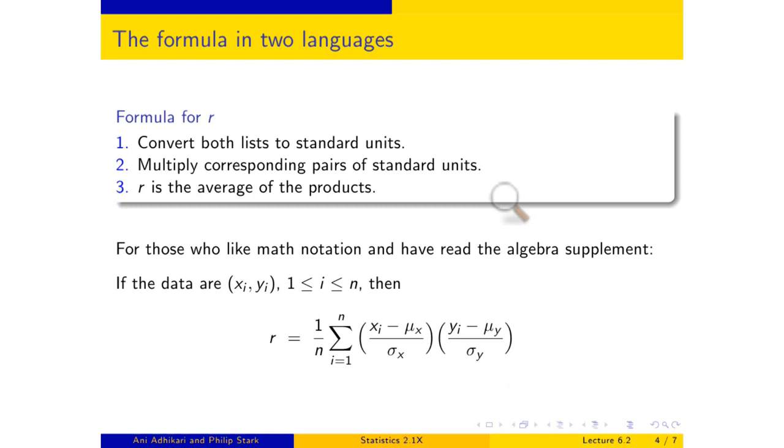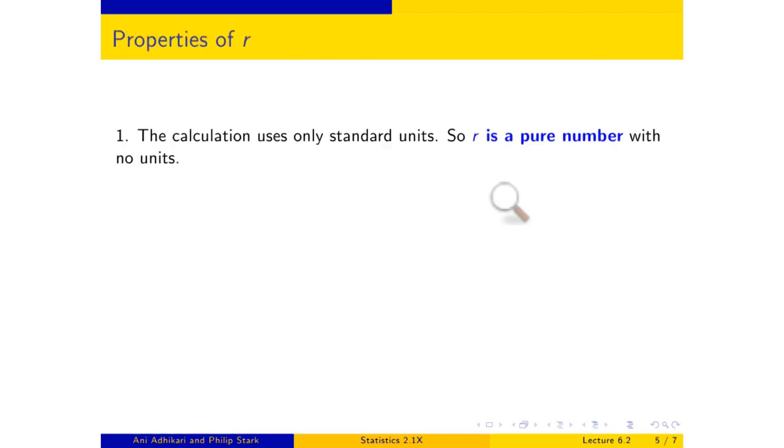Now, the way of calculation immediately tells us that r has certain properties. First, the calculation only uses standard units. So r is a pure number. It has no units. No Fahrenheit, no centigrade, no inches. It's a number. It is between minus 1 and plus 1. And trust me, is all the reason I'm going to give you. Those of you who have done some more advanced mathematics, this is a consequence of the Cauchy-Schwartz inequality, which I am not about to prove.